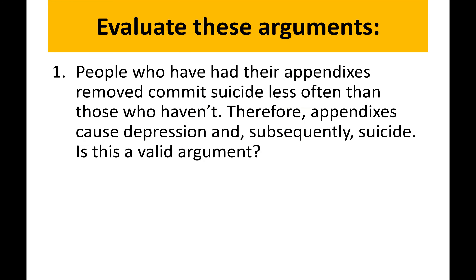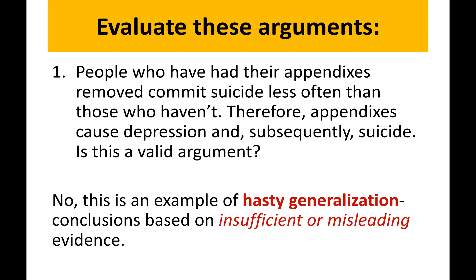Now let's look at a short exercise on how to evaluate arguments. This is an example of a weak argument. Why? Because it makes hasty generalizations — that means you only have one case or very few cases to support your idea. Unless you can find a large population of cases where people who lose their appendix commit suicide, only then can you make that claim. If you don't have enough evidences, you cannot draw a conclusion based on too little support.